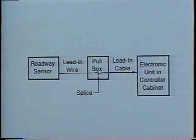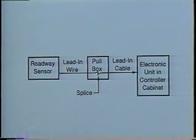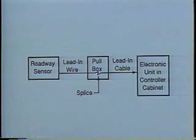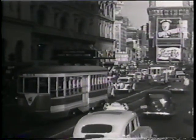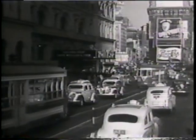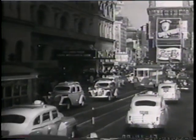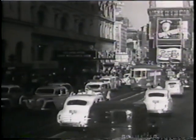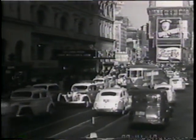Each of these systems has three main components: a roadway sensor, a lead-in cable connecting the sensor at a pull box to the controller cabinet, and an electronic unit in the controller cabinet itself. Over the years, detector equipment has kept pace with modern needs.